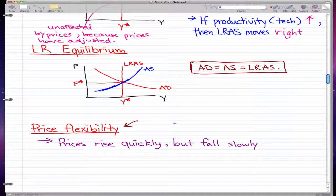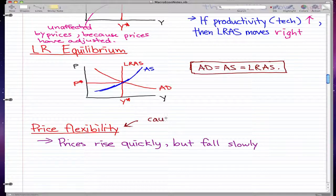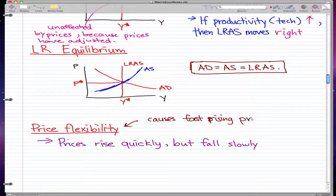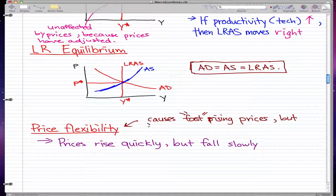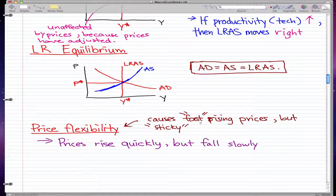Price flexibility is just that: it causes rising prices to be fast but falling prices to be sticky. So fast rising prices but slow falling prices.